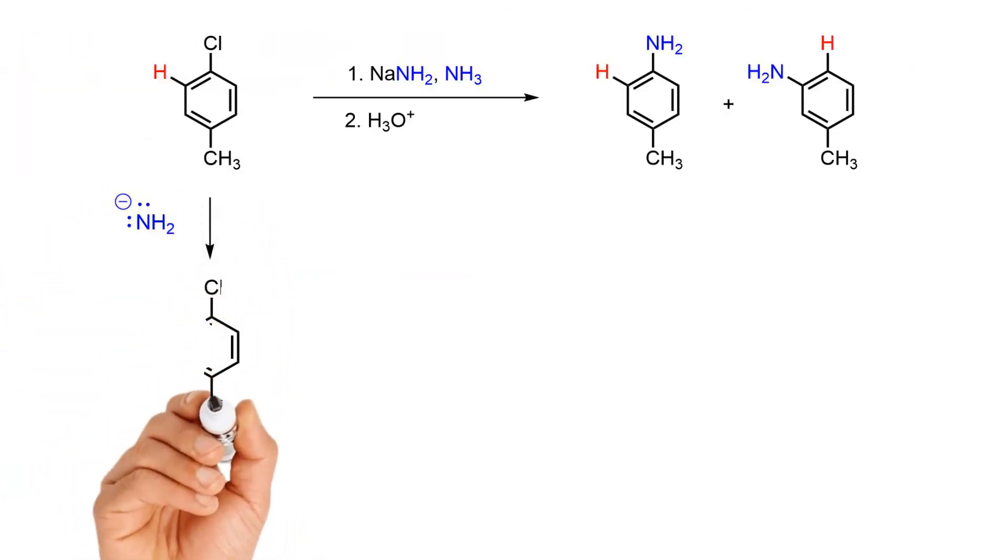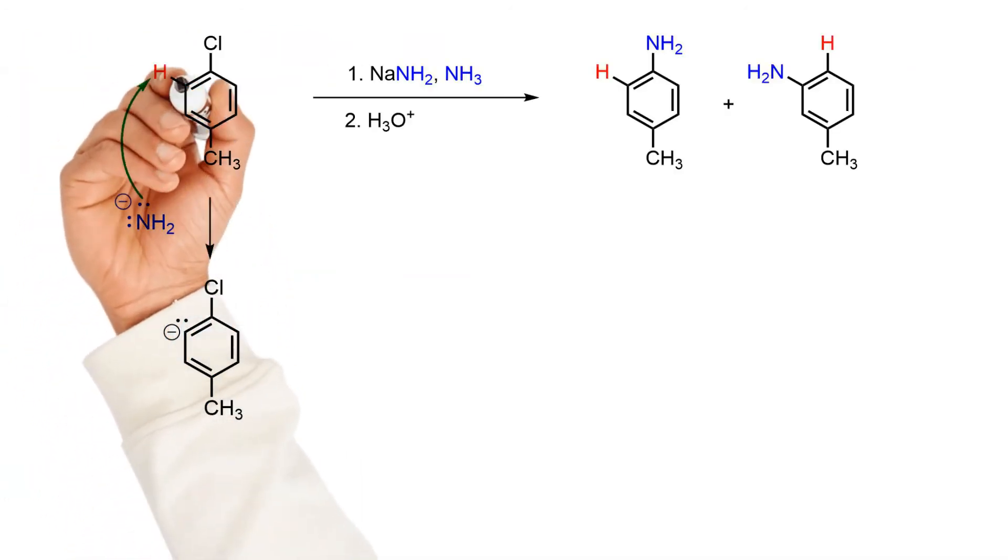The first step in the mechanism is the deprotonation beta to the electron withdrawing halogen leaving group to produce the highly reactive conjugate base.